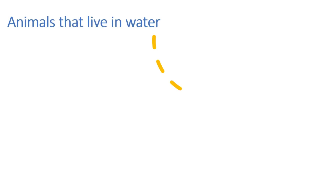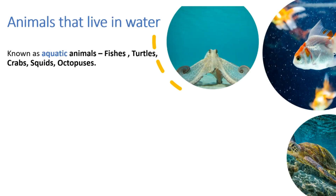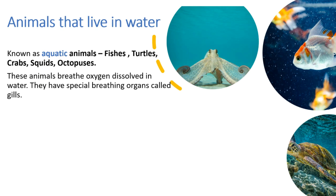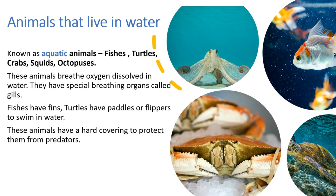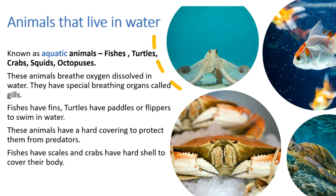Animals that live in water are called aquatic animals. Fishes, turtles, crabs, squids, octopuses are some examples of such animals. These animals breathe oxygen dissolved in water. They have special breathing organs called gills. Fishes have fins. Turtles have paddles or flippers to swim in water. These animals have a hard covering to protect them from predators. Fishes have scales and crabs have hard shell to cover their body.